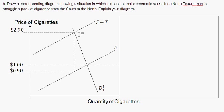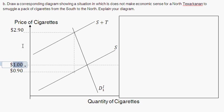With the demand curve drawn fairly steep and inelastic, our new supply curve plus the excise tax intersects the demand curve such that the new equilibrium price is $2.90. So before the equilibrium price was $1, and adding in the tax, the new equilibrium price is $2.90, with a slightly lower quantity in the market.